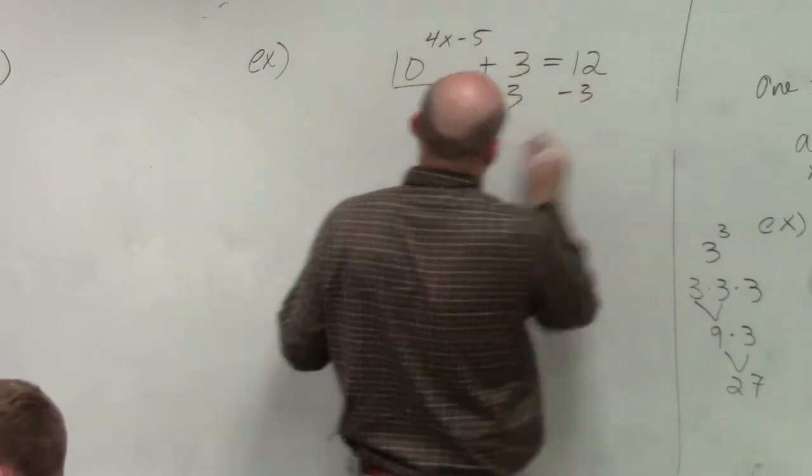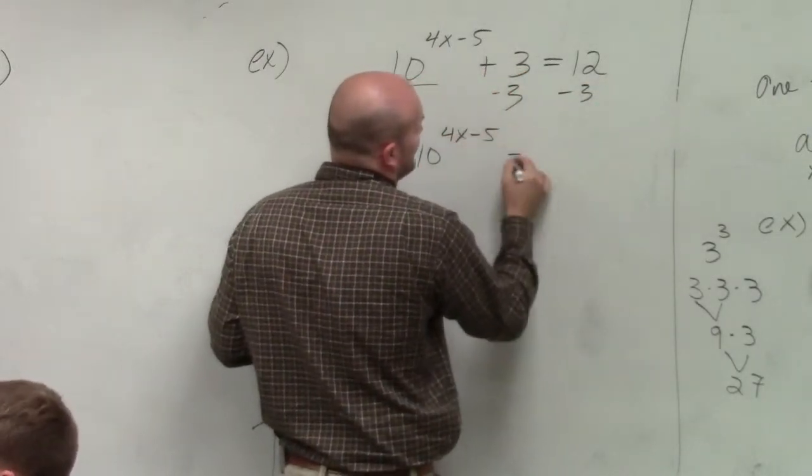So the first thing I did is I subtracted three on both sides. 10 to the 4x minus 5 equals nine.